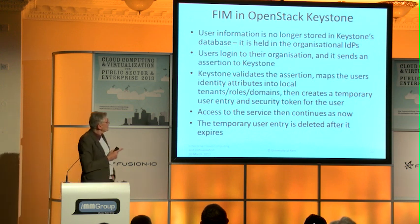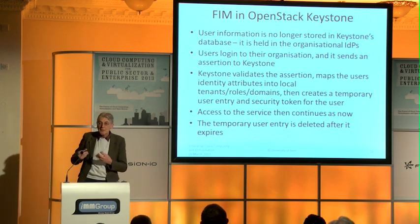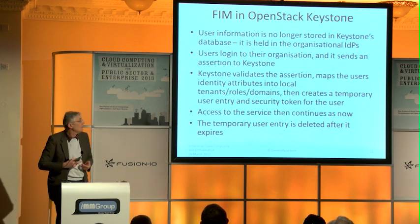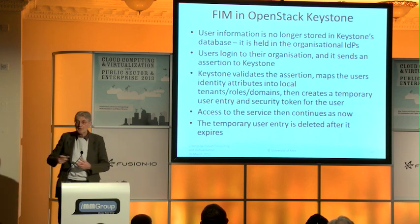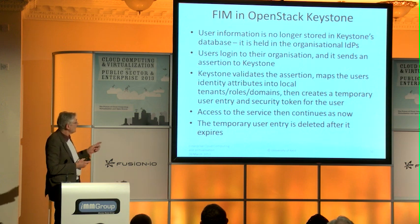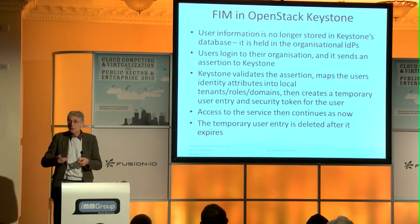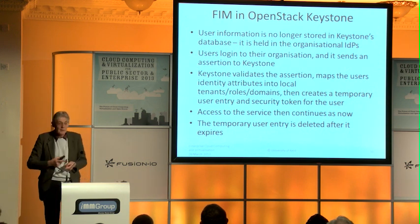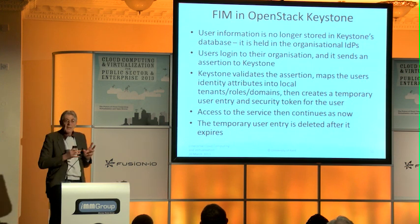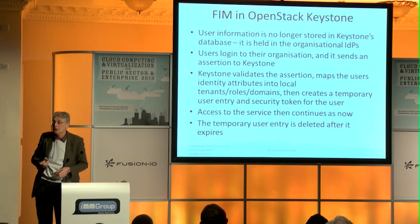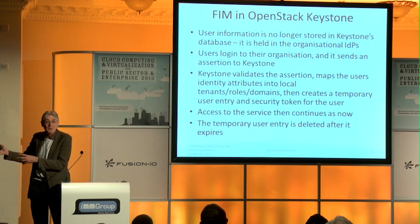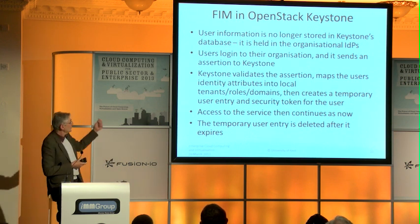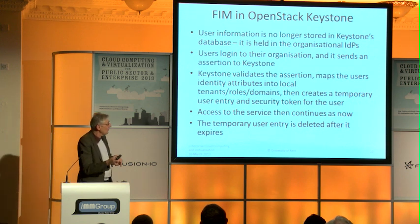What we've done is we no longer store username and password information in Keystone — in fact we don't store any of the information in Keystone. The users log in via their own organization, their organization sends the assertion to Keystone, and Keystone validates the assertion and maps the user into roles and tenants. What you do now as a cloud administrator is put some mapping rules in — when users come in with these identity attributes, map them into what were previously the tenants, roles, and projects. Those tenants, roles, and projects then get sent to the service provider and users get the same access as before.